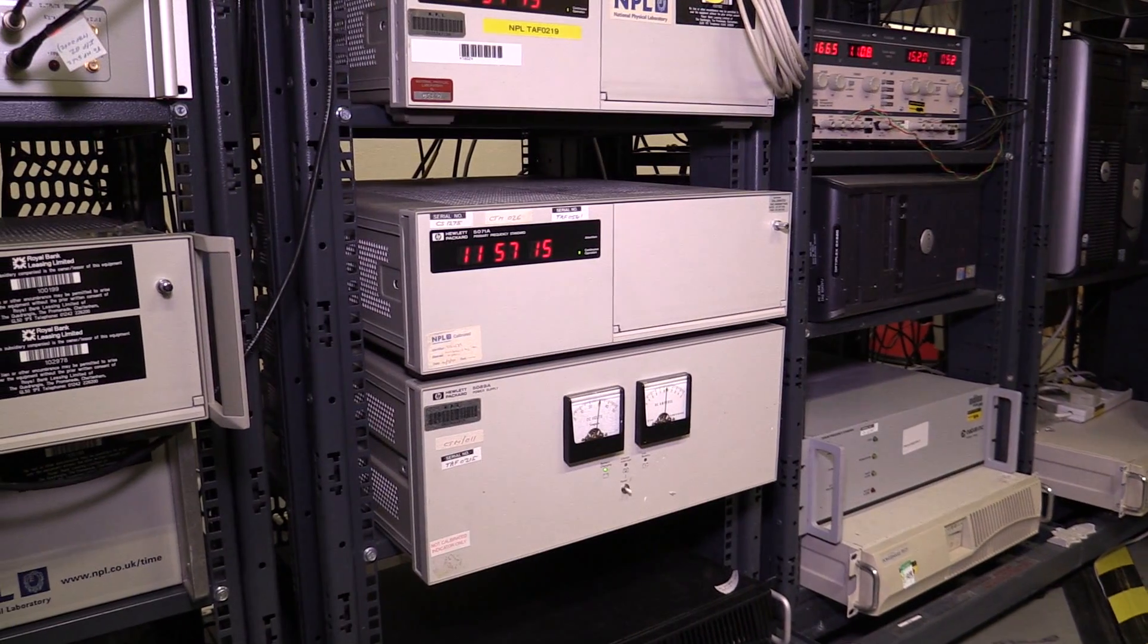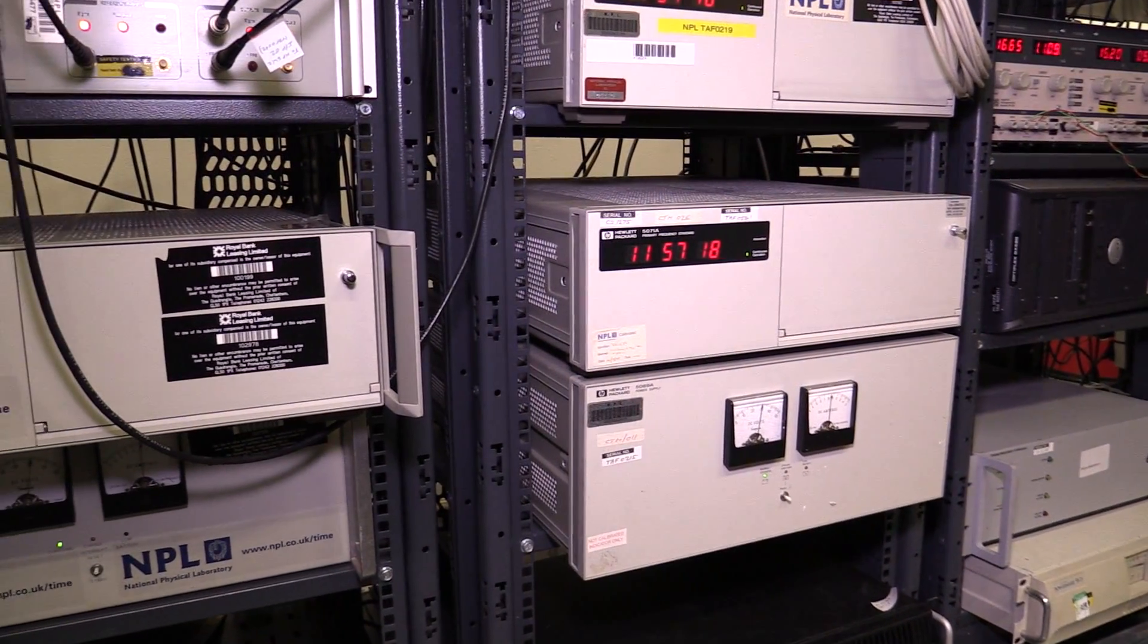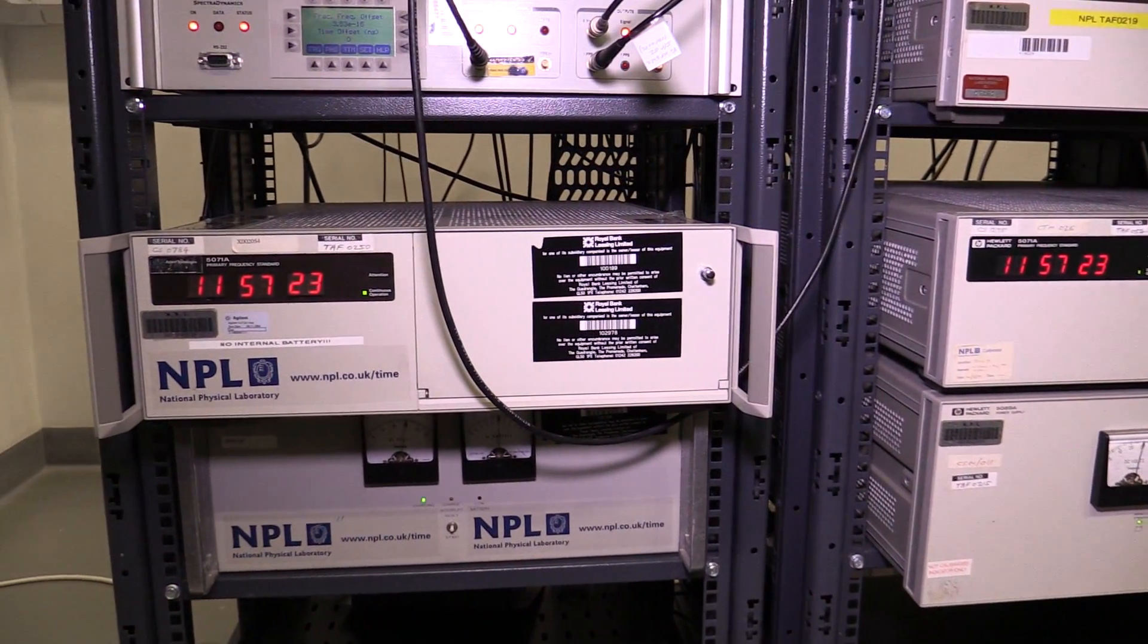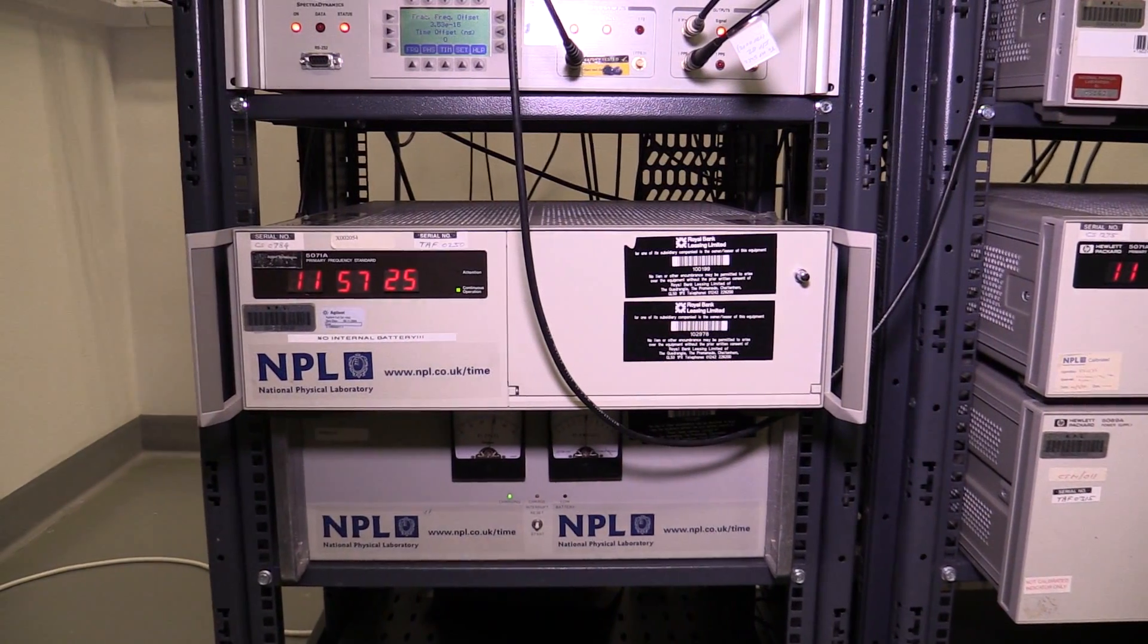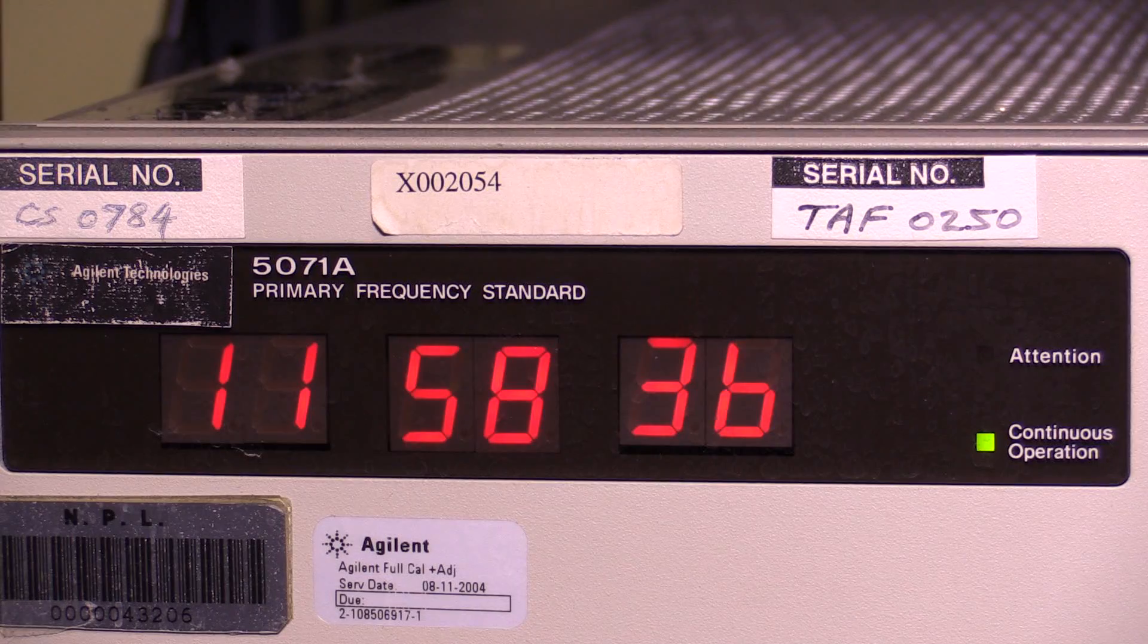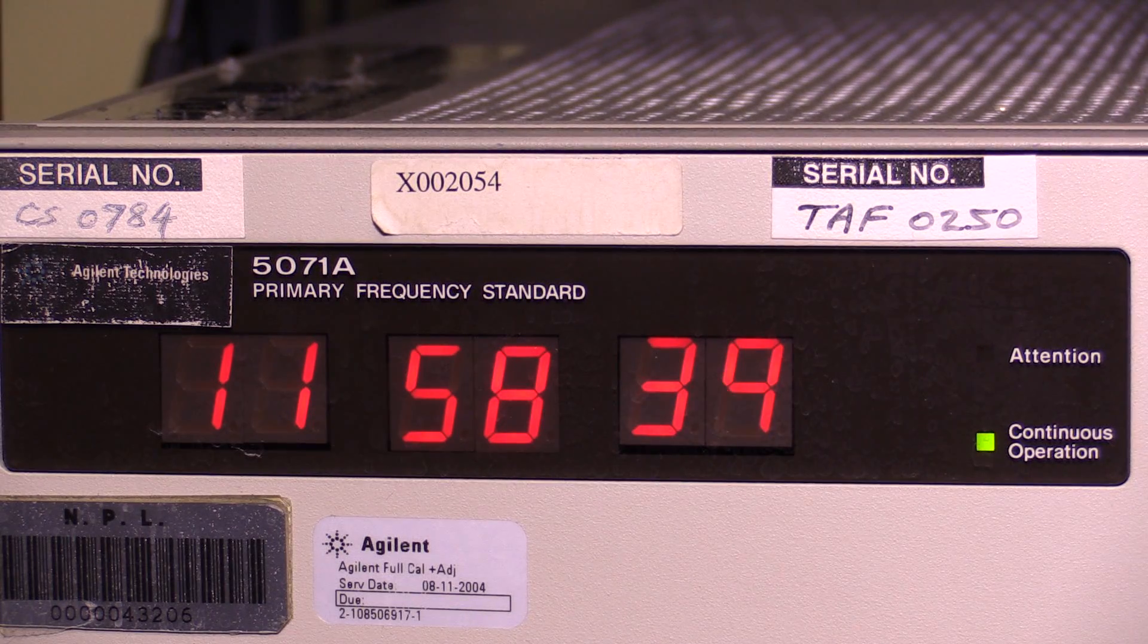The first cesium atomic clock back in the late 50s was accurate to about one part in 10 billion. Currently, the cesium clock has improved by using advanced technologies to be of the order of one part in 1000 billion billion, or alternatively one second in about 158 million years.